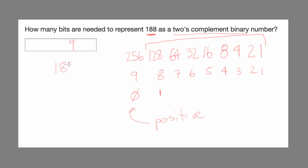So 188 minus 128 leaves us with 60. We're not going to set the 64-bit, but we will set the 32-bit. 16 is less than 128, so we'll set the 16th bit. That leaves 12.